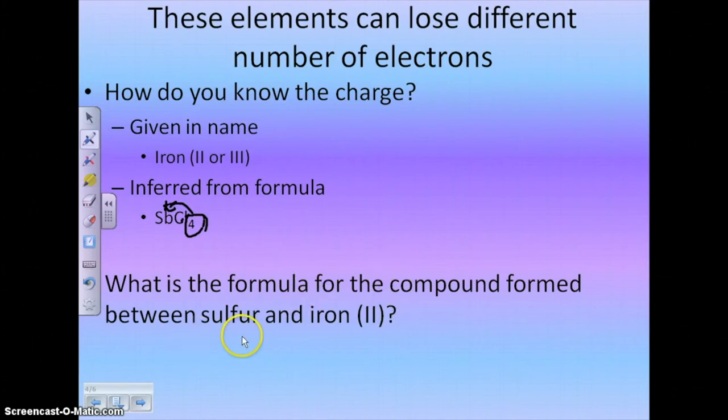So what is the formula for the compound formed between sulfur and iron 2? Well, we've got iron, and iron has a 2 plus charge as indicated by the Roman numeral 2. And then we have sulfur, which is a 2 minus charge. Eventually, you have to get good at recognizing which one is positive and which one is negative first because it will save you some time. So I recognized that iron was positive, so I went ahead and put him first. You notice that you have 2 plus and 2 minus. Well, these are just going to cancel. So you're really just going to end up with a formula of FeS.